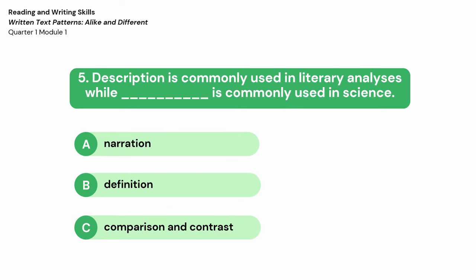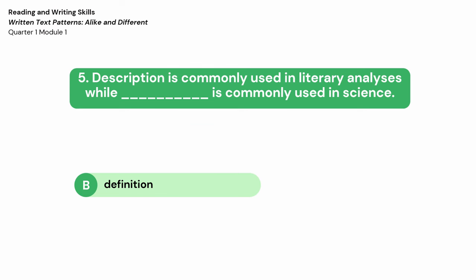Number 5: Description is commonly used in literary analysis, while blank is commonly used in science. A. Narration. B. Definition. C. Comparison and contrast. The correct answer is B — Definition.